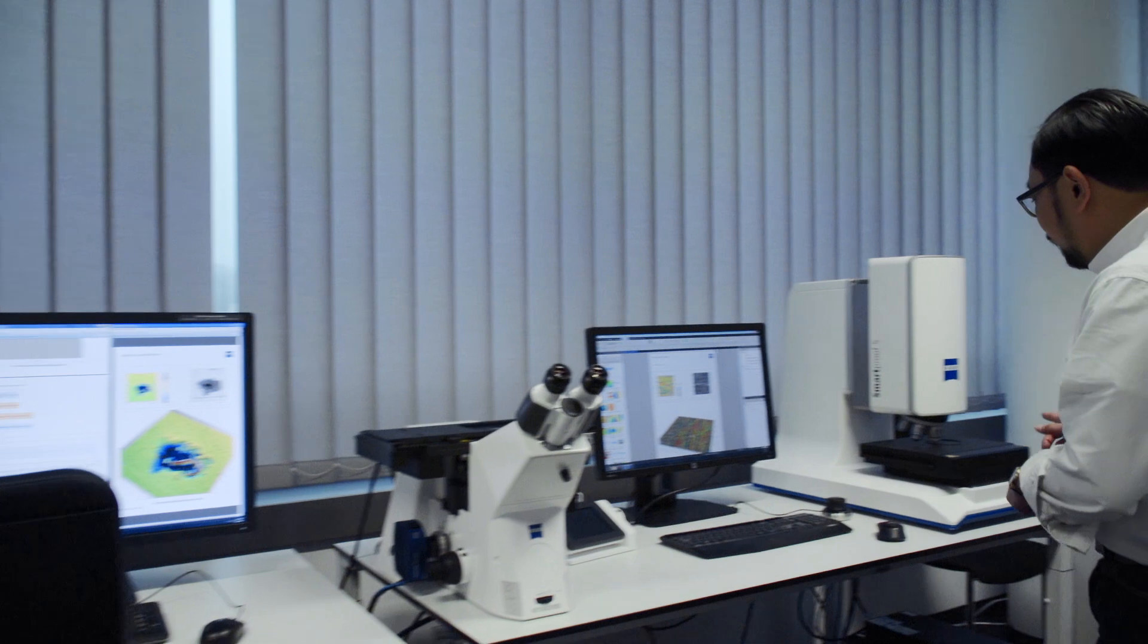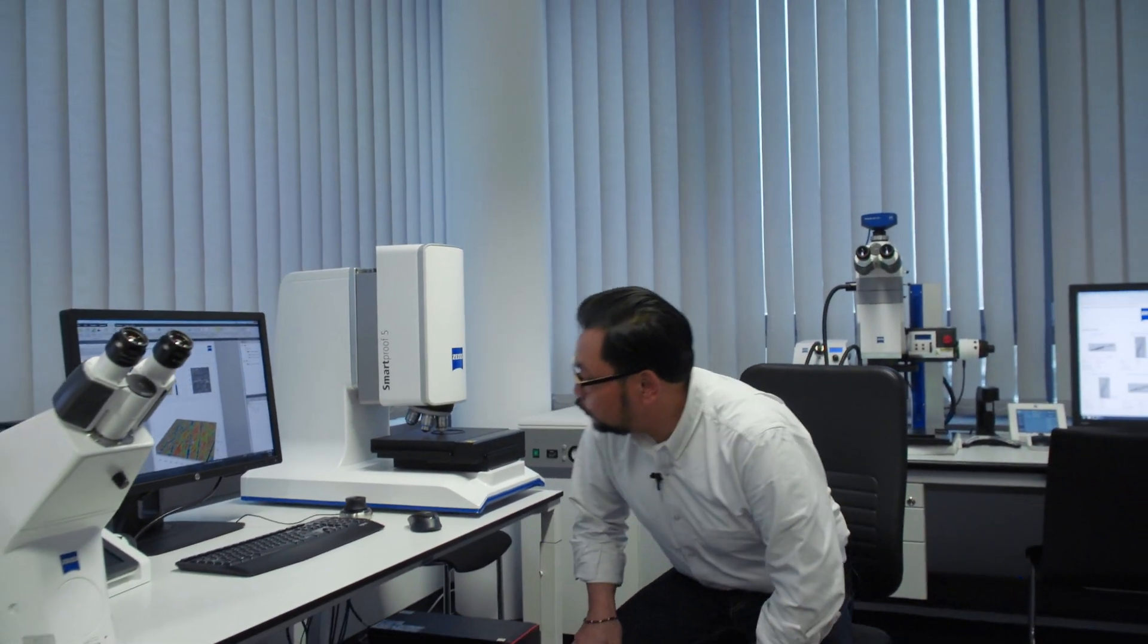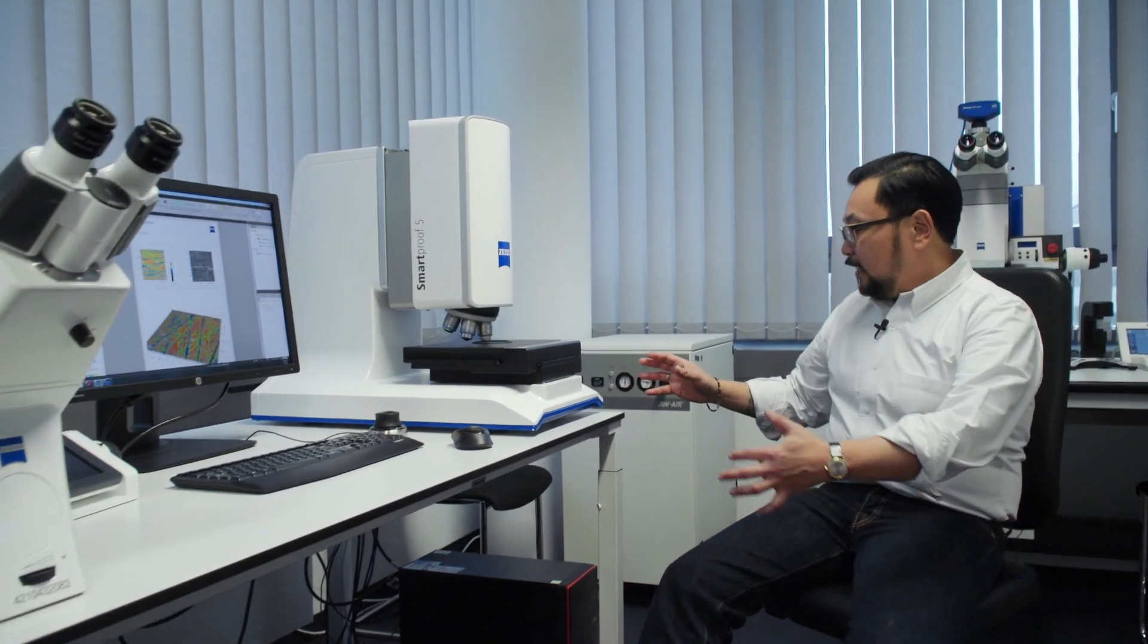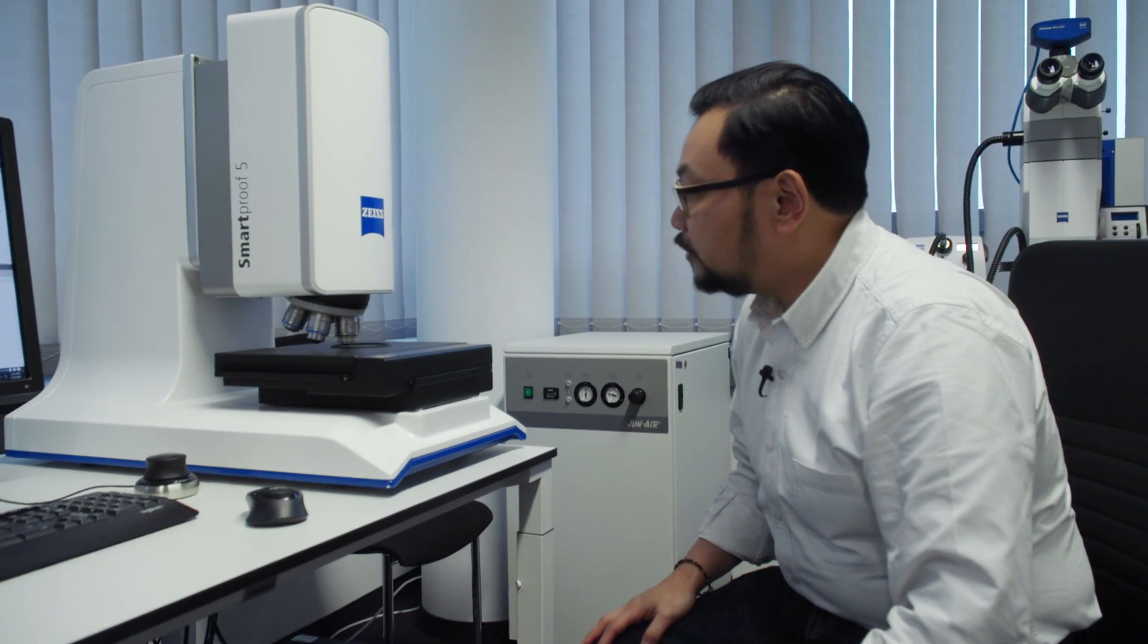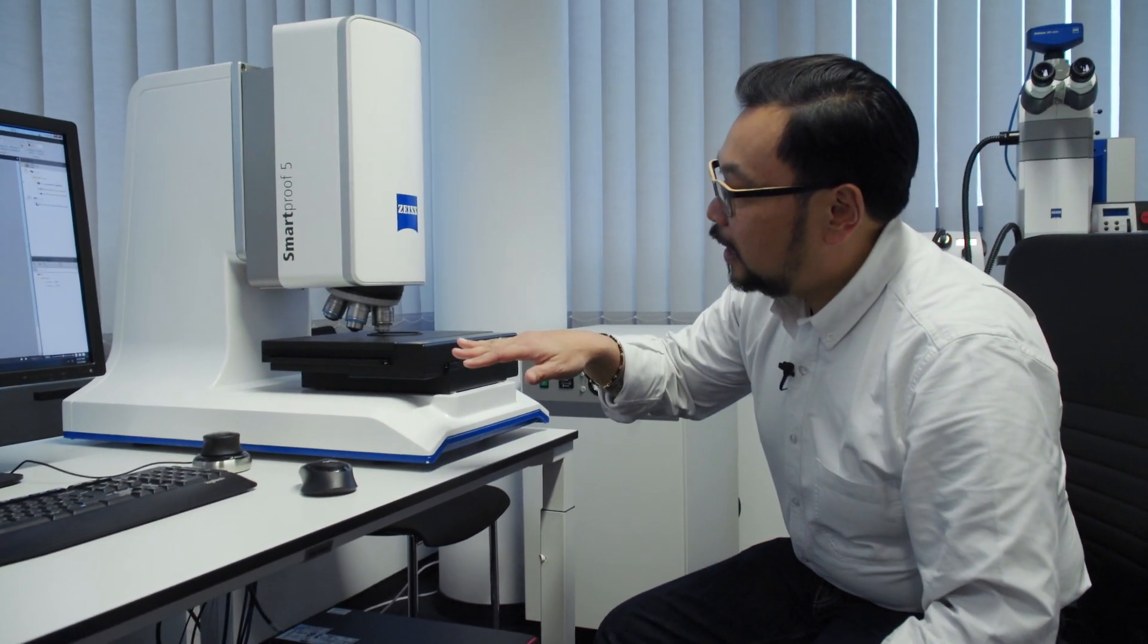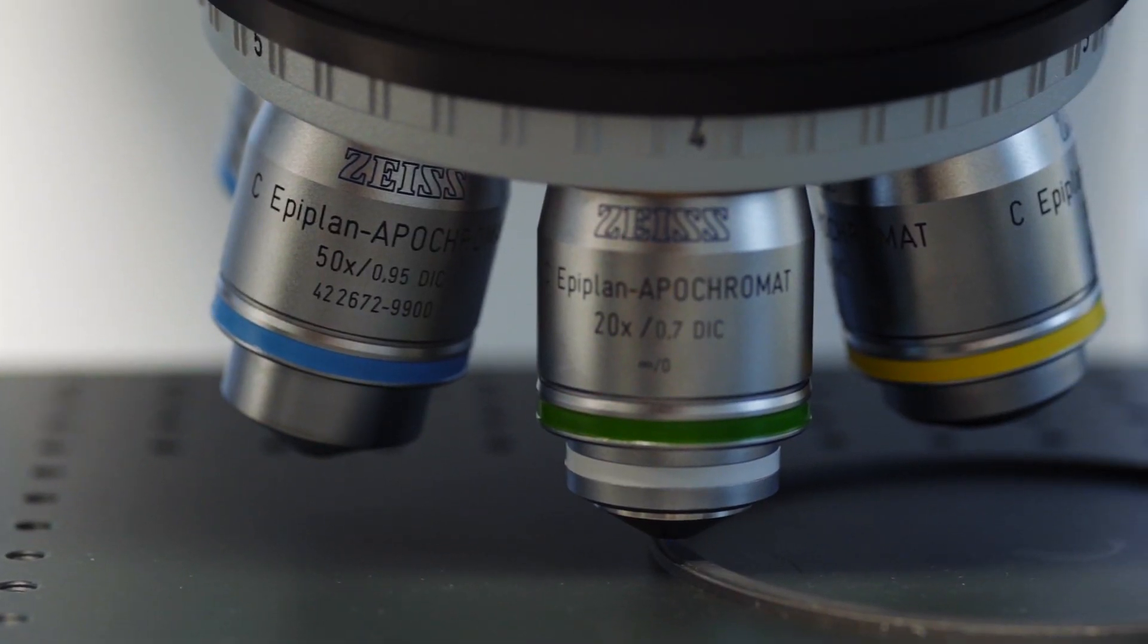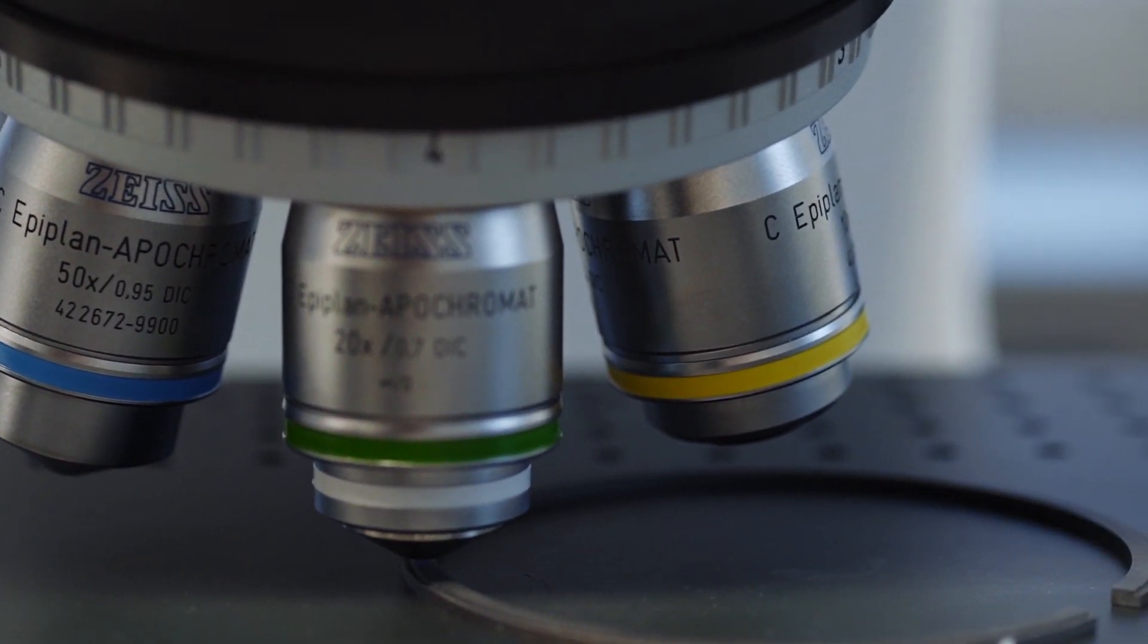But what we found over here was something we call the Smart Proof. The Smart Proof is a little different take on the confocal microscope. First and foremost you'll see that it's on a normal table because it's less susceptible to vibration which is something my customer wanted. Also what you'll see is we've replaced the laser light source with an LED light source which makes it a lot more robust and easier to replace and maintain.